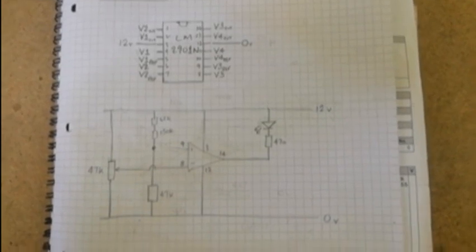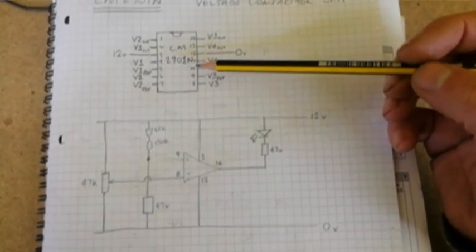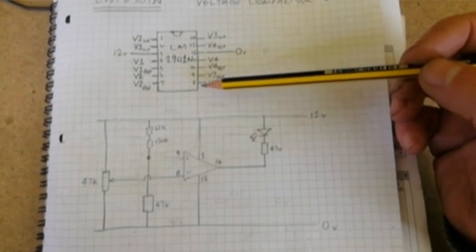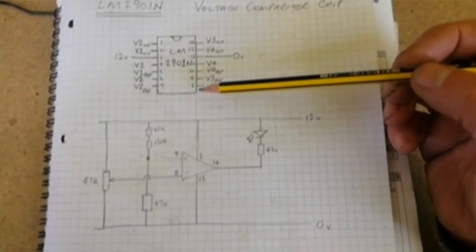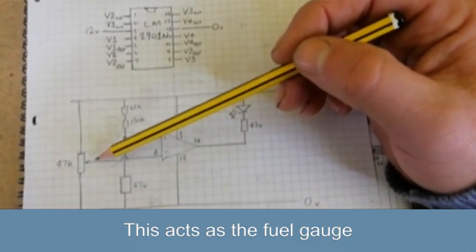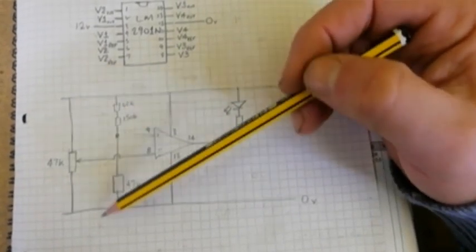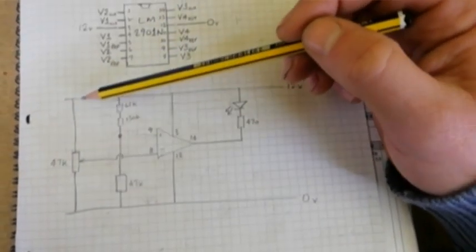This is the circuit using an LM2901N transistor, which is a voltage comparison transistor. This is the 47k potentiometer going from zero to 12 volts.